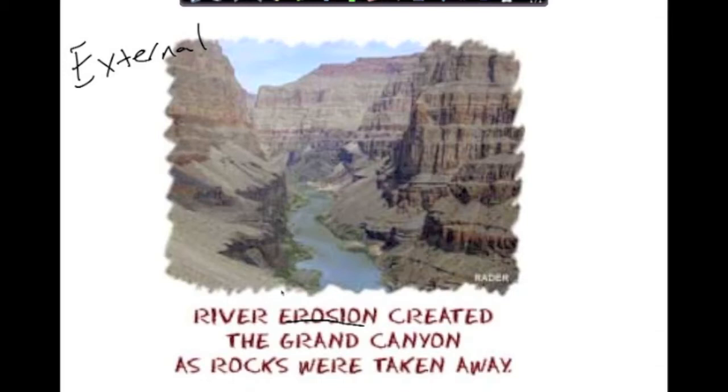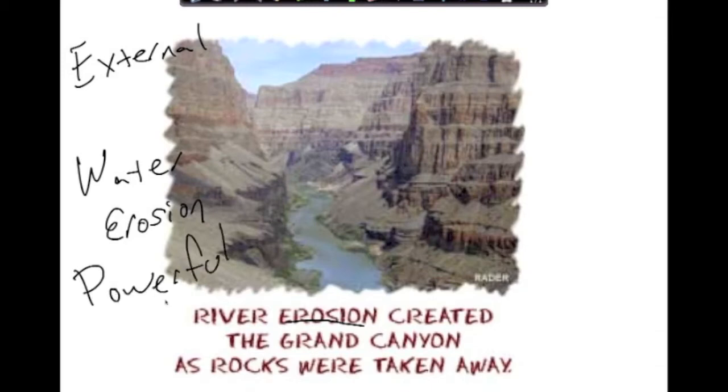Water erosion created the Grand Canyon as rocks were taken away. Water erosion. And this is powerful. It's the most powerful type of erosion. It occurred over millions of years.